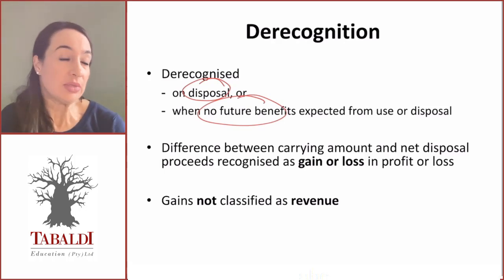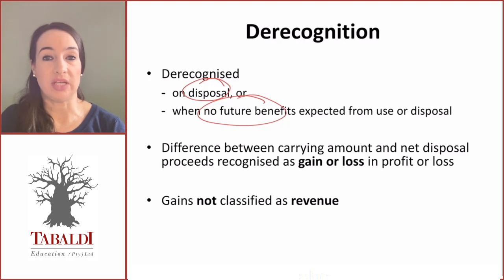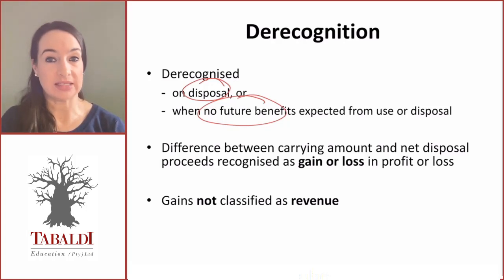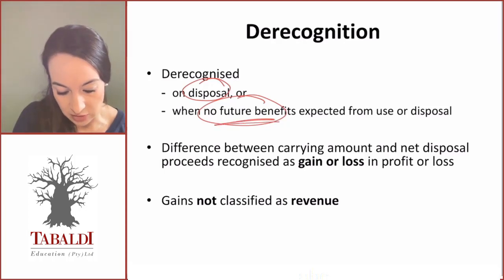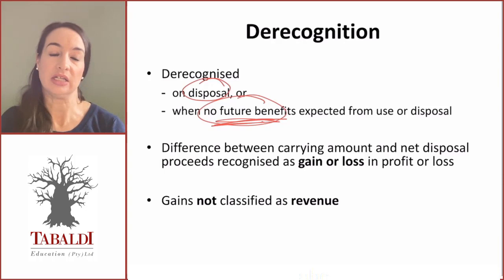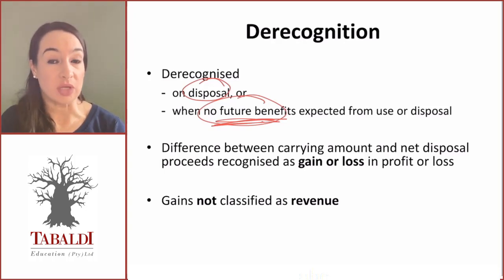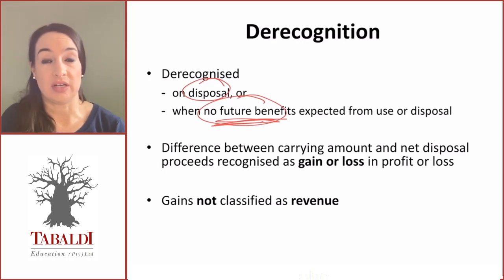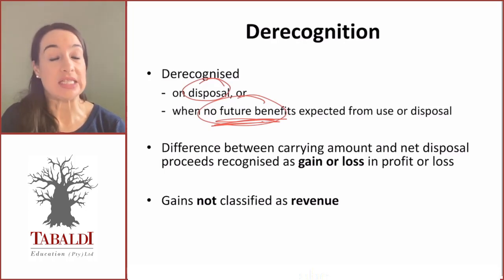A disposal would simply be a sale of an item of PPE. If you have a piece of land which you no longer wish to use and you sell it on to another party, that would be an instance of a disposal arising and you would need to de-recognize that piece of land. Another example would be when there are no longer any future economic benefits expected, either from use or through sale. For instance, if you have a piece of equipment that is destroyed in a fire, the value of that asset if completely destroyed would be zero, and as a result you would need to de-recognize or remove that asset from your financial statements.